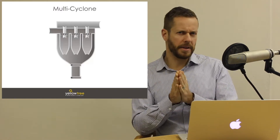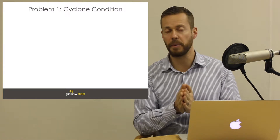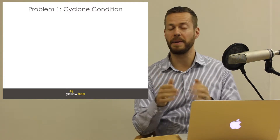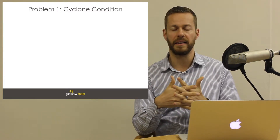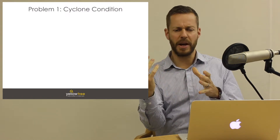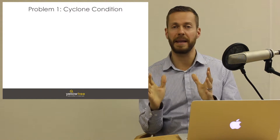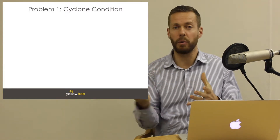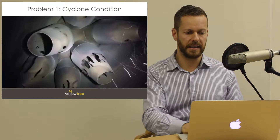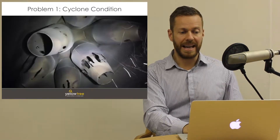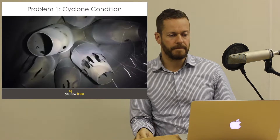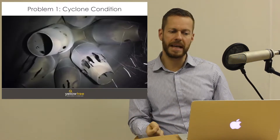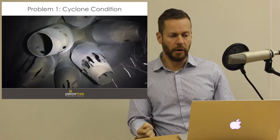There are five problems with multicyclones to discuss. The first is the most simple: most multicyclones have not been opened up in 20 or 30 years, and they are eroded inside. The very nature of the separation process — spinning abrasive particulate matter inside a metal body all day — wears down the cyclones. As shown in the video clips, individual cyclones are often in very poor condition; some are completely eroded away entirely.